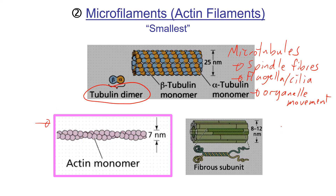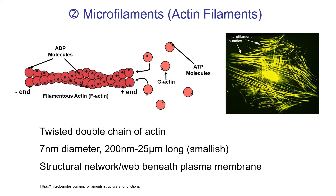Today we're talking about actin filaments and intermediate filaments. Actin filaments are also called microfilaments — the two names are interchangeable. These are not tubes; they're filaments, meaning very skinny fibers, and they are the smallest of the cytoskeleton structures. They're made of actin as the subunit protein, and building or disassembling them costs ATP.